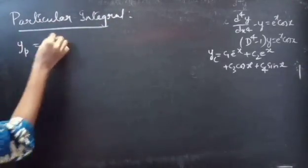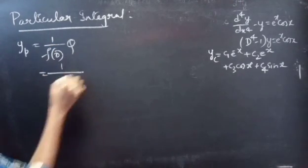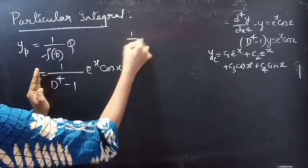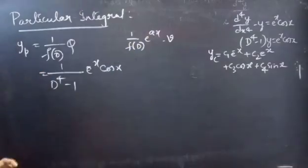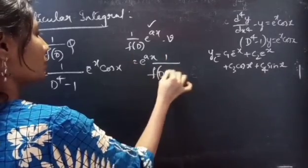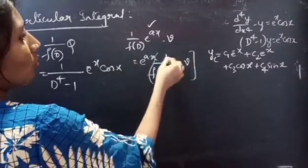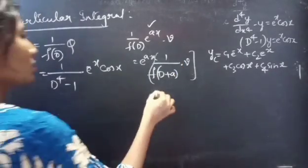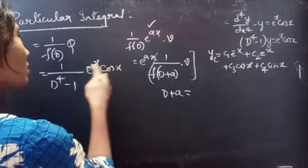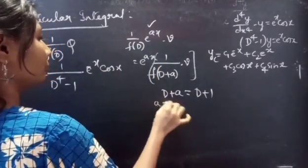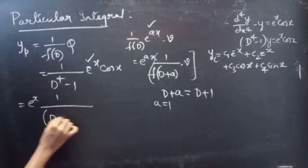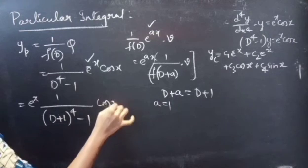Now let's find the particular integral using yp = 1/f(D) · Q. We have f(D) = D⁴ − 1 and Q = e^x cos x. This is of the form 1/f(D) · e^(ax) · v. We shift e^x to the left by replacing D with D + a, where a = 1, giving D + 1. So we get yp = e^x · 1/f(D+1) · cos x.